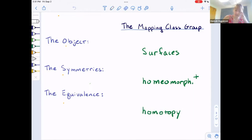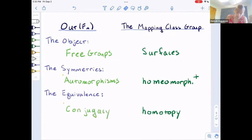In the finite type setting, we are drawing these analogies with out F_n, which is the group of outer automorphisms of free groups. The object we're studying are free groups of finite rank, and the types of symmetries we want to look at are automorphisms. We're saying that two are the same if they're the same up to conjugacy. We're modding out conjugate inner automorphisms.